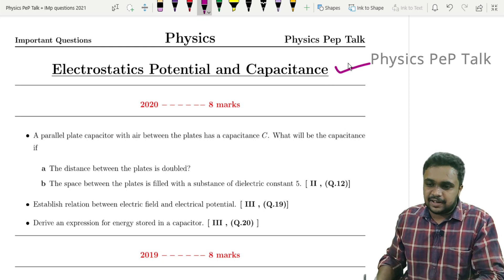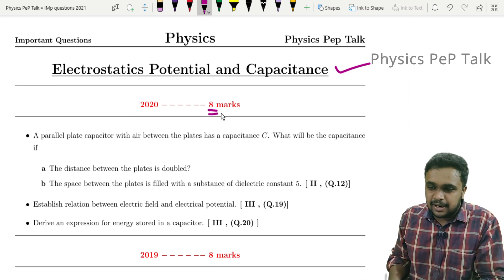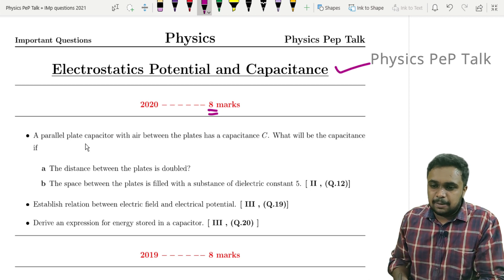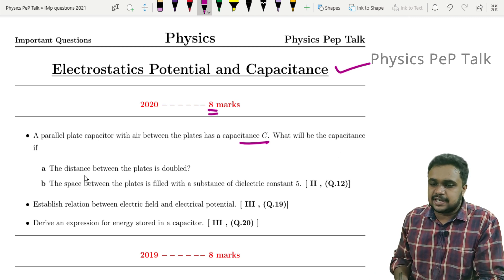So 2020 has eight marks from this chapter. Second question, mainly two marks: A parallel plate capacitor with air between the plates has capacitance C. What happens to the capacitance if distance between the plates is doubled?